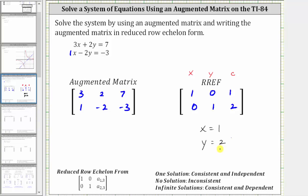We often express the solution as an ordered pair in the form of x comma y, and therefore the solution is the ordered pair one comma two.